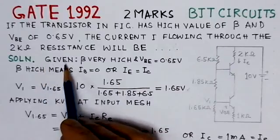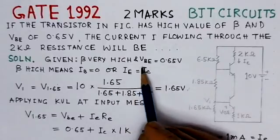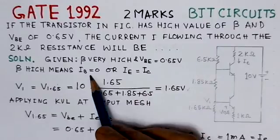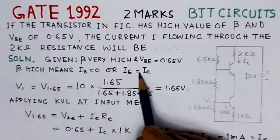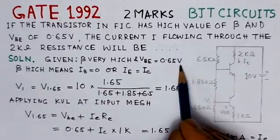Here what we observe is that beta is considered to be very high. That means the base current IB is 0, and the emitter current IE is equal to the collector current IC. The value of VBE = 0.65V is given.